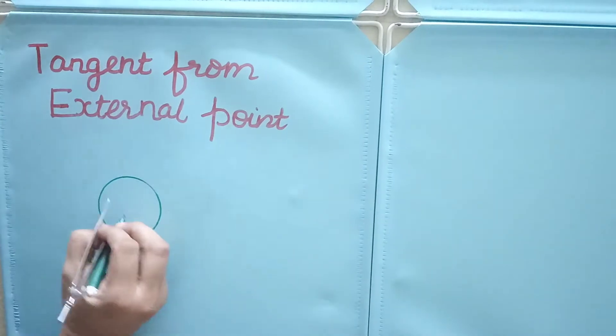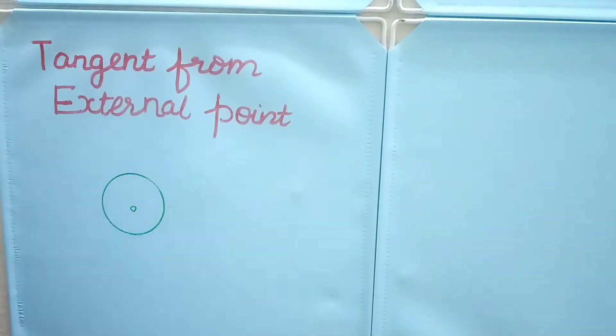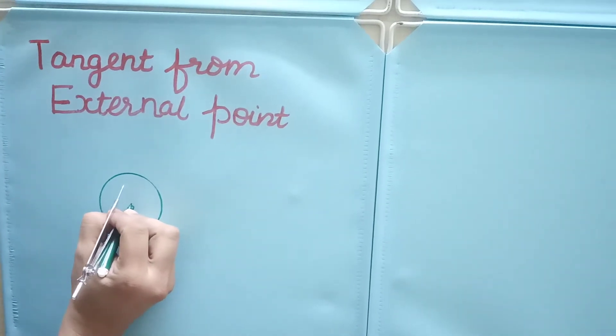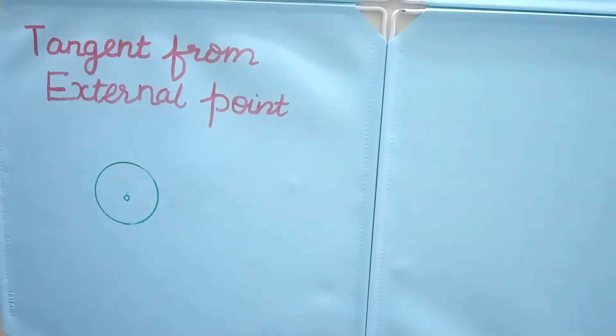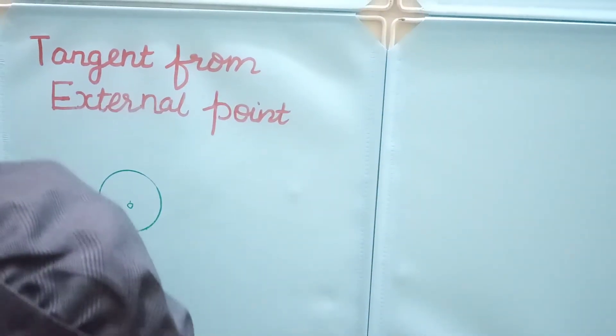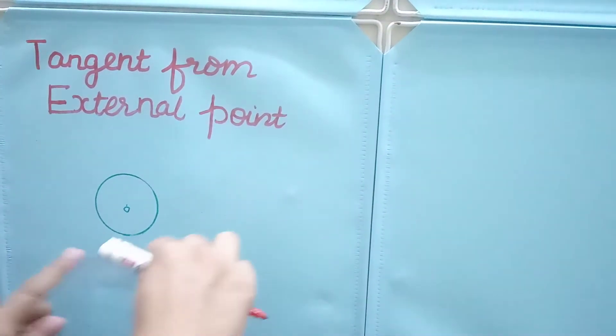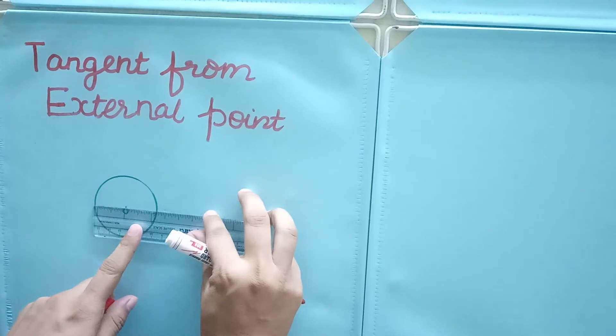This is the center of the circle, point O, and we need to draw a tangent from some external point P on this circle. Suppose there is an external point at some distance from the center of the circle.